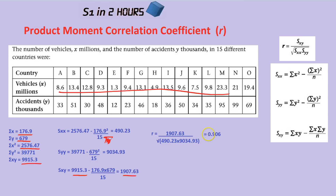The answer would be 0.906. With the calculator, make sure you're using the fraction-style divide, not just the division symbol, because the calculator might think you mean divided by just the first term rather than the whole expression. What does 0.906 represent? It means there is a correlation between these two things — the more vehicles there are, the more accidents — because this is a positive number. It's quite close to 1 so it is quite strongly correlated, which makes sense.